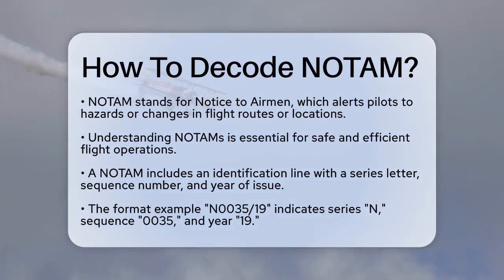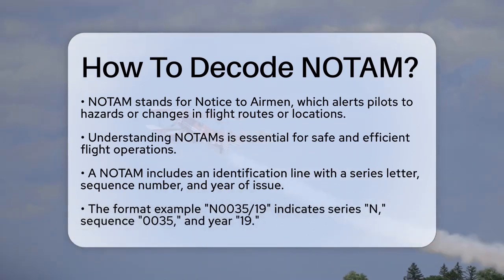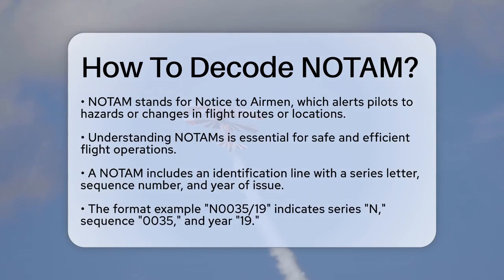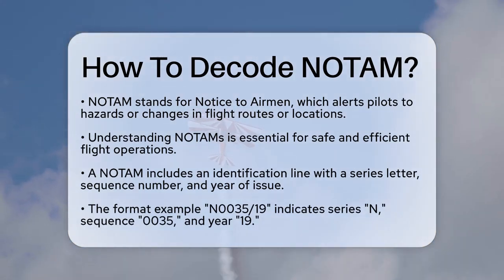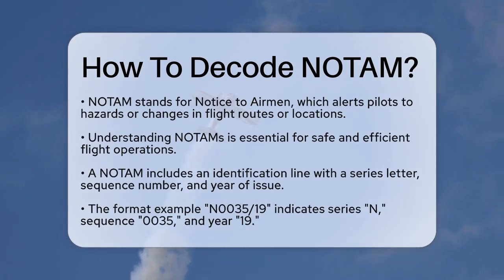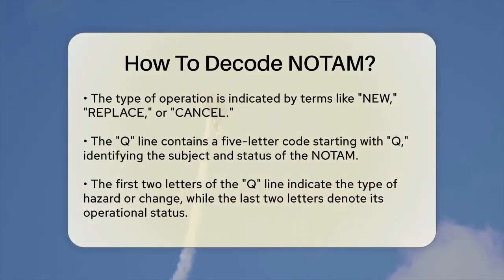When you look at a NOTAM, you'll see it's organized into several key parts. The first line includes the NOTAM identification, which consists of a series, a sequence number, and the year of issue. For example, in the new ICAO format, it might look like N0035-19, where N is the series letter, 0035 is the sequence number, and 19 is the year.